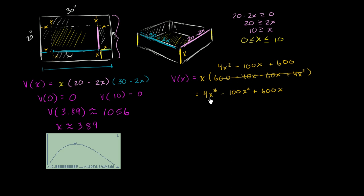Now it'll be pretty straightforward to take the derivative. So v prime of x is going to be equal to - I just have to use the power rule multiple times - so 4 times 3 is 12x squared, minus 200x, plus 600.